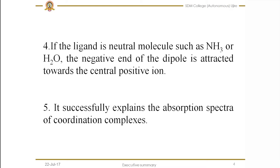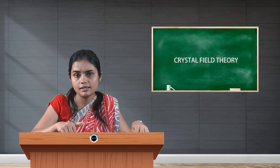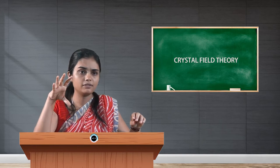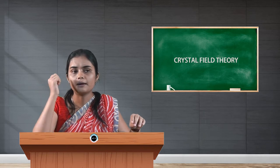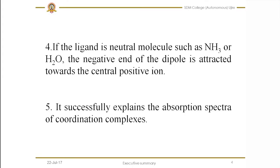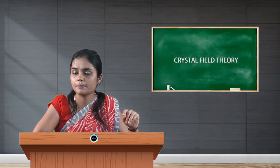If the ligand is neutral, then the negative end of the dipole is attracted towards the central metal ion. If you consider the metal ion as positive and the ligand as neutral, the negative end of the dipole will attract towards the positive end. Examples are ammonia and water — we refer to them as amine and aqua. The fifth postulate says that CFT successfully explains the absorption spectra of coordination complexes, which VBT failed to explain.